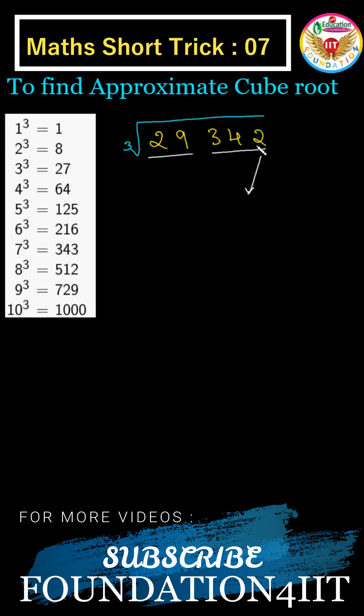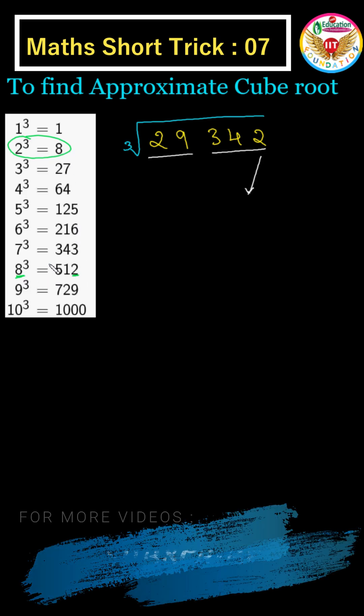2 is the unit's place, that means for 2, it is 8. Ends with 2 means 8 cubed we are getting.